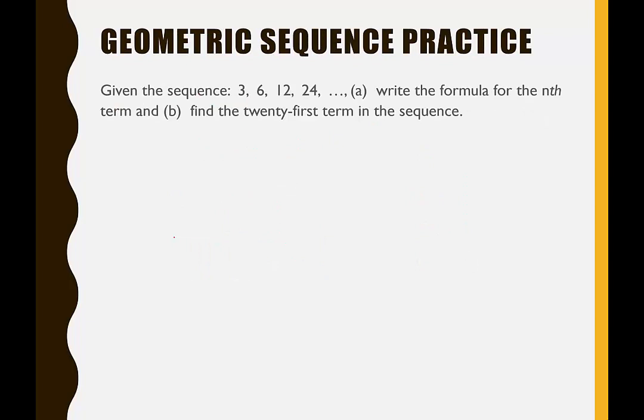This time we're given the sequence 3, 6, 12, 24, and so forth. We're going to write the formula for the nth term, and then use that formula to find the 21st term. Now is a good time to pause and make sure you can write the formula and figure out the 21st term.